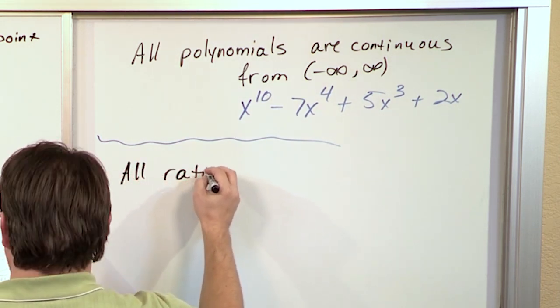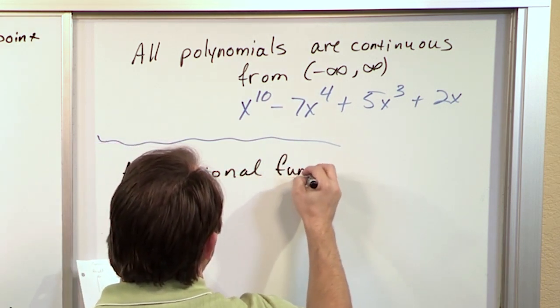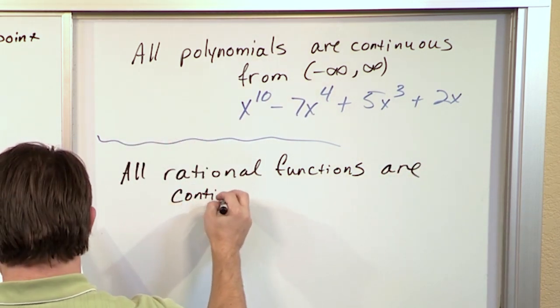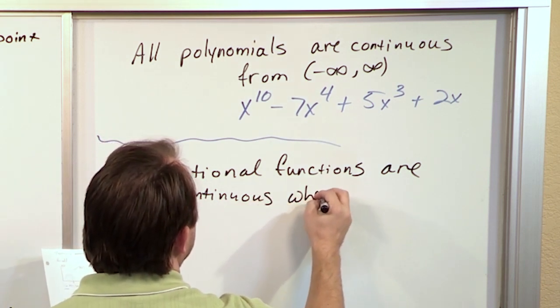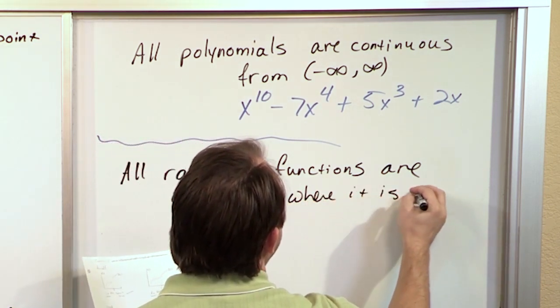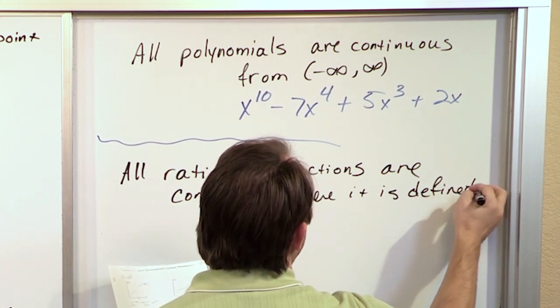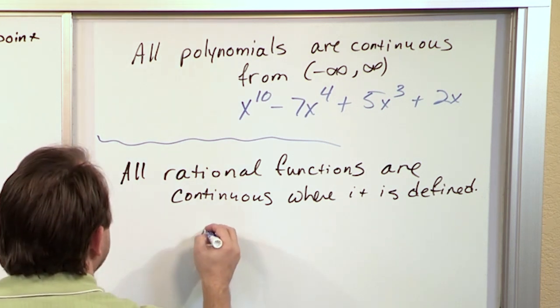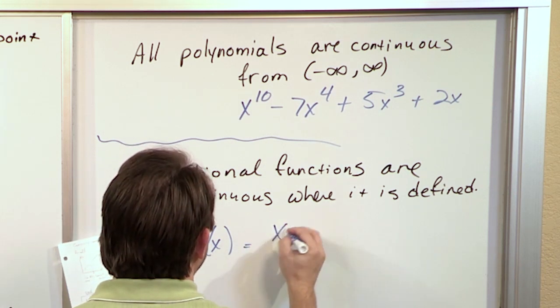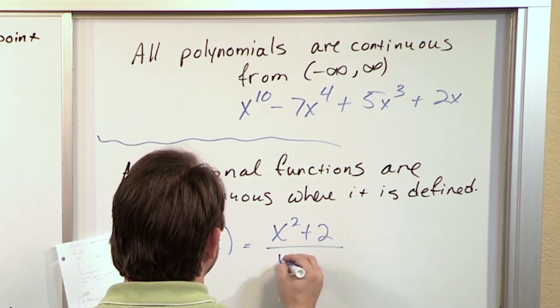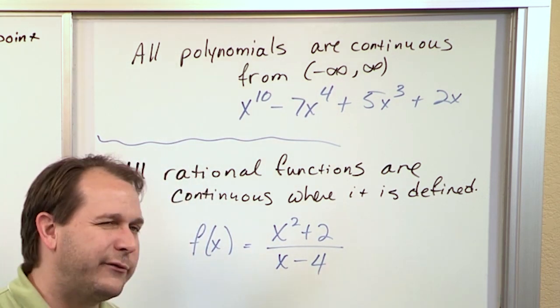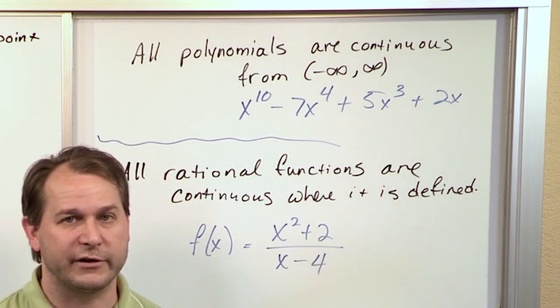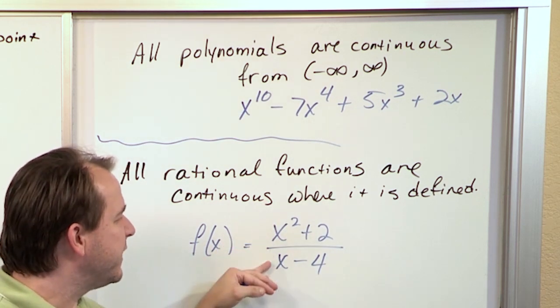Remember, I've told you a couple times what is a rational function. A rational function is just simply a function that can be written like a fraction. So you might have, for instance, x squared plus 2 over x minus 4. You may have all kind of wondered as we were doing a lot of problems, like how did I know that I could just plug in values into those?